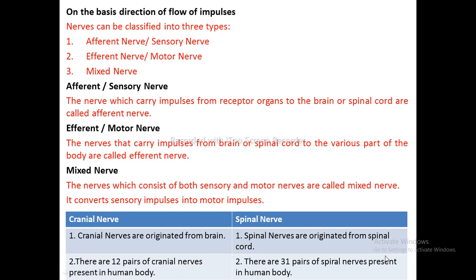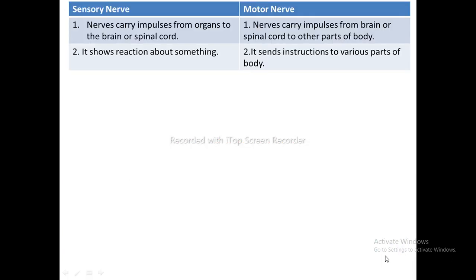Differences between cranial and spinal nerves: There are 12 pairs of cranial nerves and 31 pairs of spinal nerves in the human body. Differences between sensory and motor nerves: Sensory nerve carries impulses from organs to the brain or spinal cord, whereas motor nerve carries impulses from the brain or spinal cord to other parts of the body. Sensory nerve shows reactions about something, whereas motor nerve sends instructions to various parts of the body.